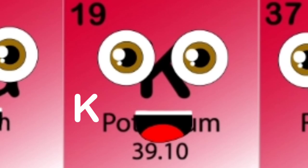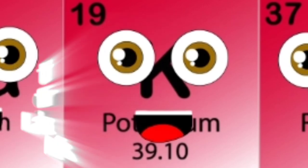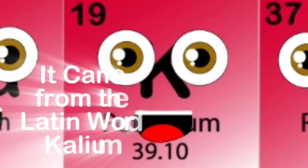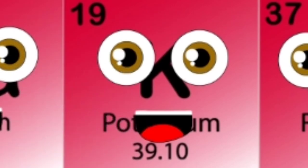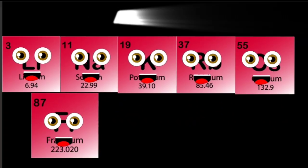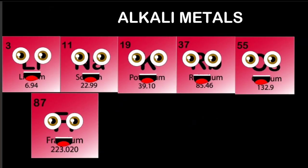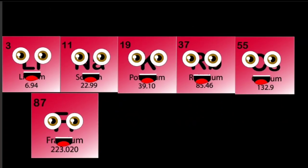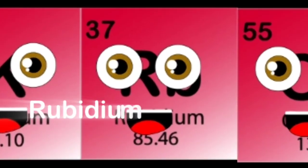My symbol is K. In this song you did learn it came from the Latin word kalium. In the ocean I churn. We are the alkali metals of the periodic table, come learn about us whenever you feel you're able!